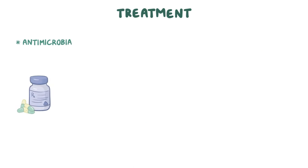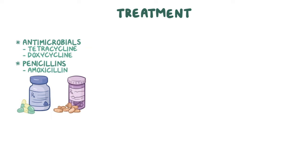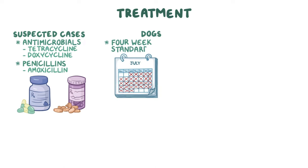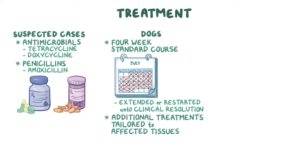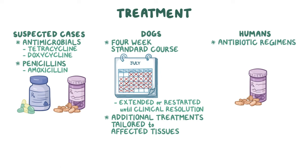Treatment with the antimicrobials tetracycline, like doxycycline, and penicillins, like amoxicillin, are used in suspected cases. In dogs, a 4-week standard course can be extended or restarted until clinical resolution. Additional treatments tailored to affected tissues may be needed. In humans, a variety of antibiotic regimens are used depending on the stage of the disease, but they typically include amoxicillin, doxycycline, or ceftriaxone.